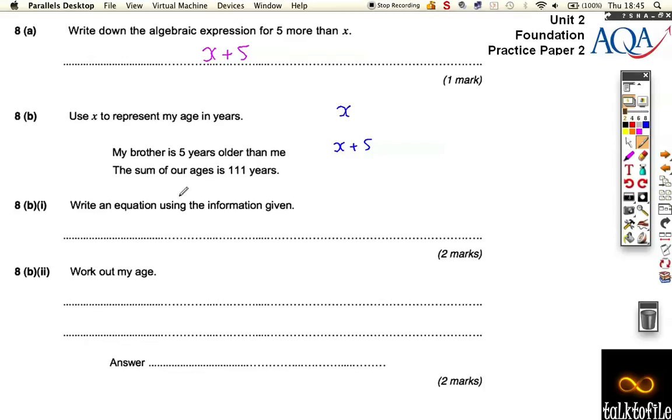So if we write down an equation, we could write down that x plus, that's my age, plus my brother's age, which is x plus 5, is equal to 111. Or, we could write down, because we can actually collect these two, you don't need to have done this in the mark scheme. It says you don't need to, but let's practice it anyway. x plus x is actually 2x plus 5 is 111.